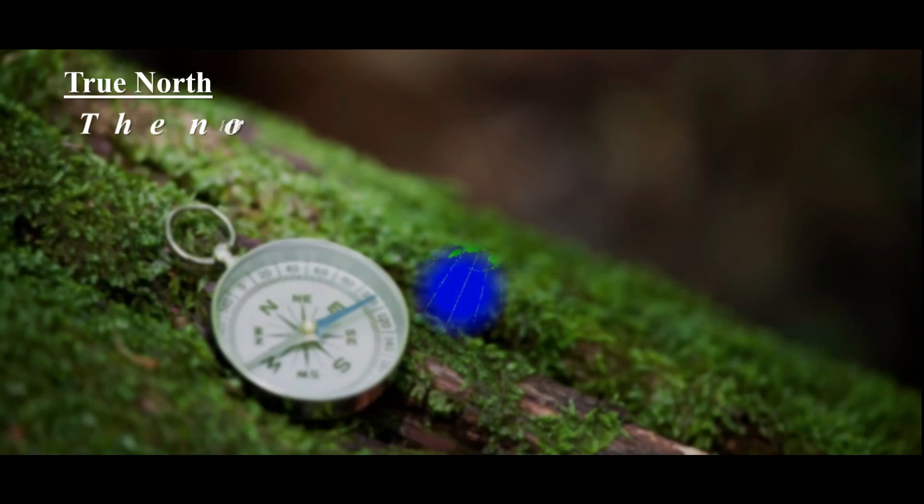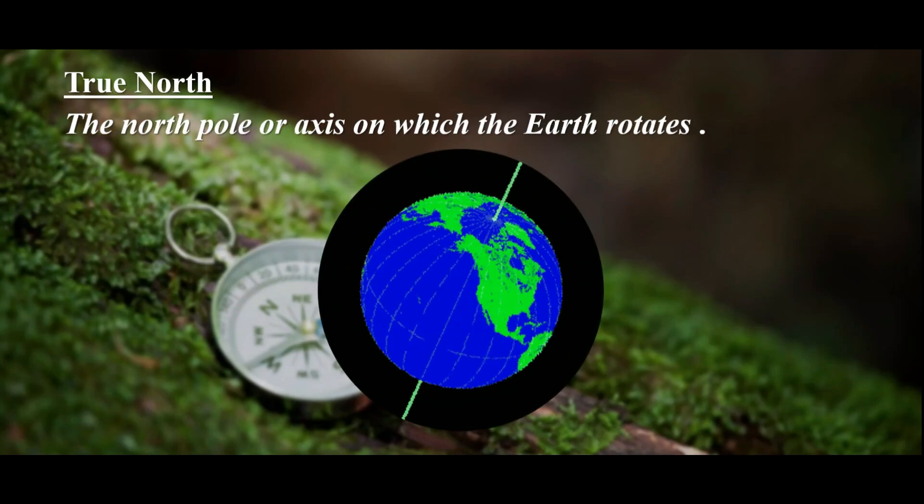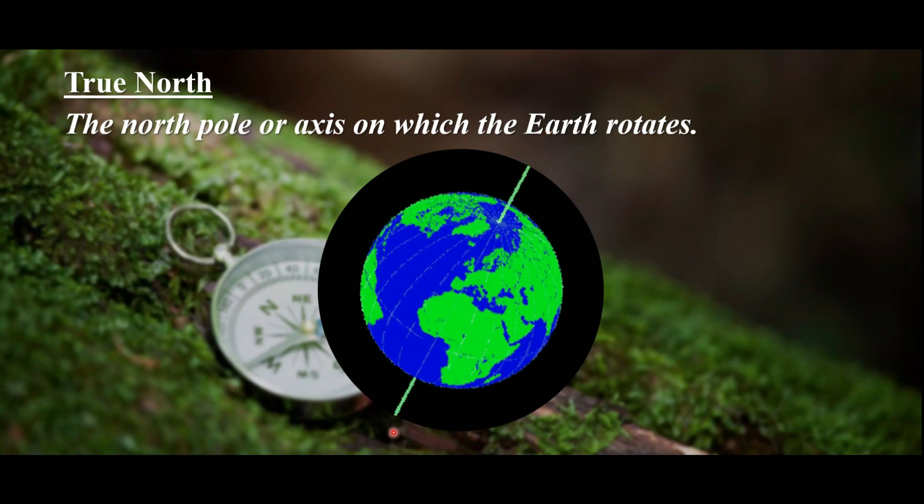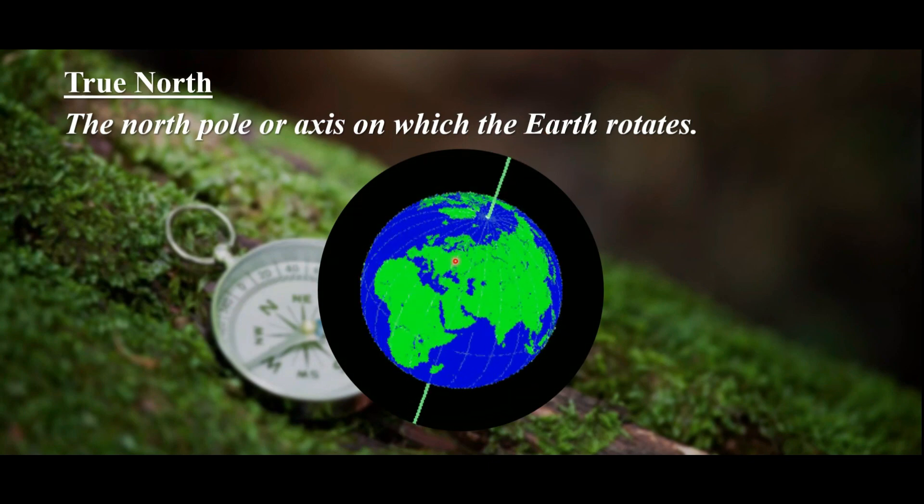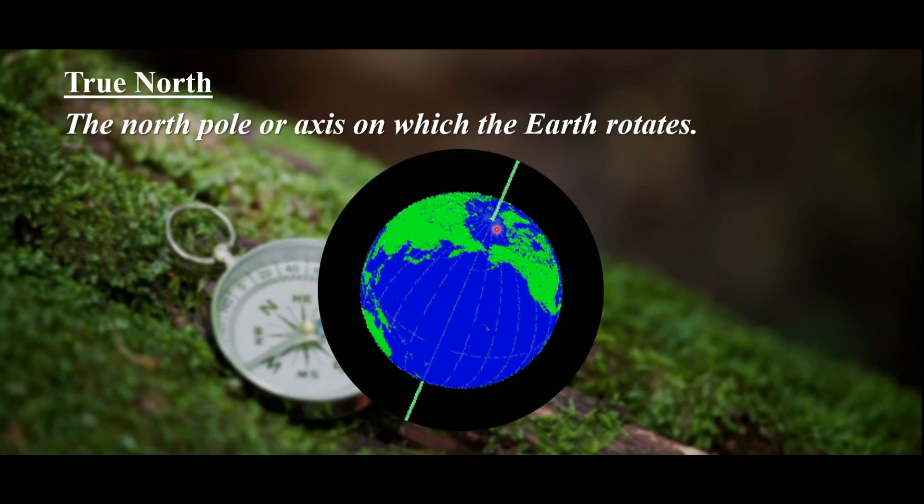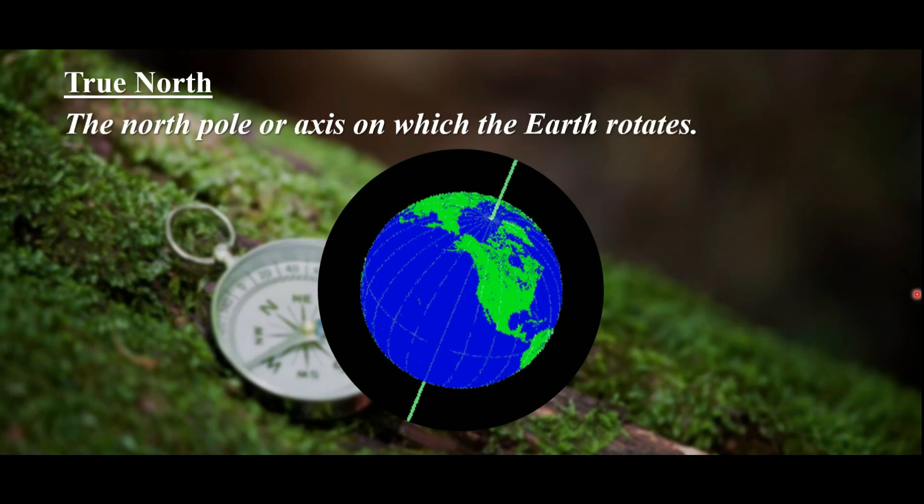So true north. True north is the north pole or axis on which Earth rotates. So this is Earth's axis and it rotates on it. That right there, that topmost spot, is true north and true south would be the opposite.